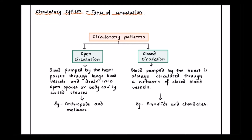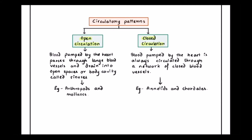Let's look into the different kinds of circulation. On the basis of circulatory patterns, we have two kinds: open circulation and closed circulation. In open circulation, the blood is pumped by the heart and passes through large blood vessels, then is drained into open spaces, body cavities, or sinuses. There is no proper vascular system, which is why it drains into open spaces rather than proper vessels.